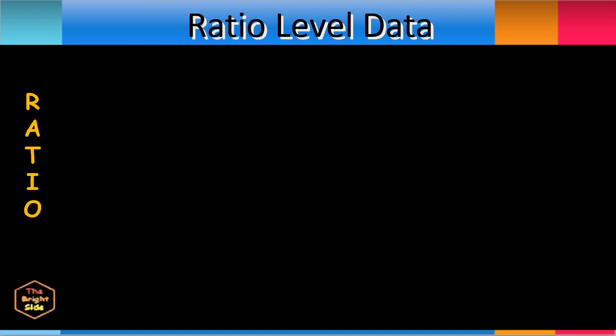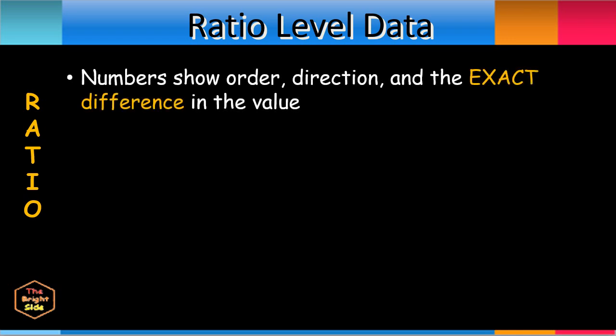This is the highest level of data measurement. Ratio level data numbers show the same properties of interval data such as order, direction, and the exact difference in the value. And the location of origin, or the zero, is absolute. This is a quantitative data where there is a true zero and equal intervals between neighboring points. A zero on a ratio scale means there is a total absence of the variable you are measuring. This means when the data equals zero, there is none of that variable.